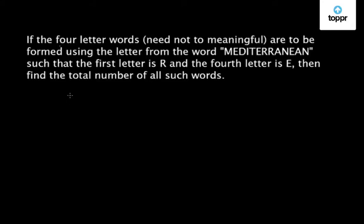Let us discuss a question on permutation and combination which came in JEE Main 2016. Here is the question. If the four letter words, need not be meaningful, are to be formed using the letter from the word Mediterranean such that the first letter is R and the fourth letter is E, then find the total number of all such words.